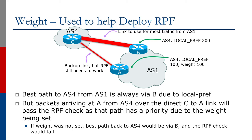Referring to the diagram, this is an example of an autonomous system with two links to a neighboring AS. If we want to deploy RPF here we need to use weight, otherwise we end up with severe connectivity problems. The link from AS1 to AS4 — from router B to router C — is the primary link, and there's also a backup link from router A to router C. We want all traffic to go from AS1 to AS4 over the B-to-C link, so as we learned with local preference, we set high local preference — say 200 — on it.